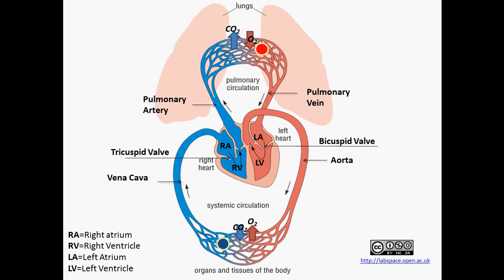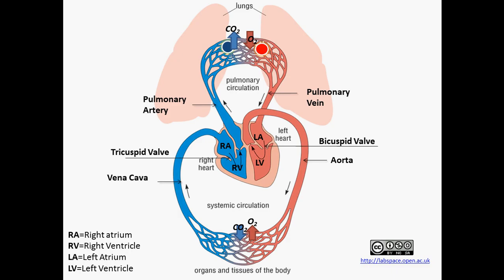This blood is going to travel through the vena cava back to the right atrium. It will then flow through the tricuspid valve to the right ventricle, through the semilunar valve to the pulmonary artery, which then goes into the lungs.